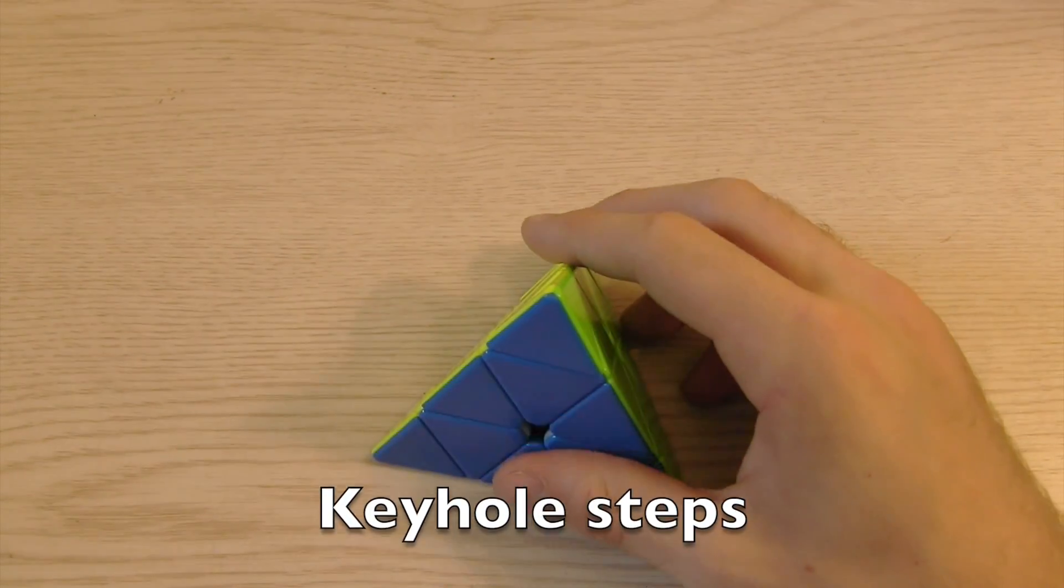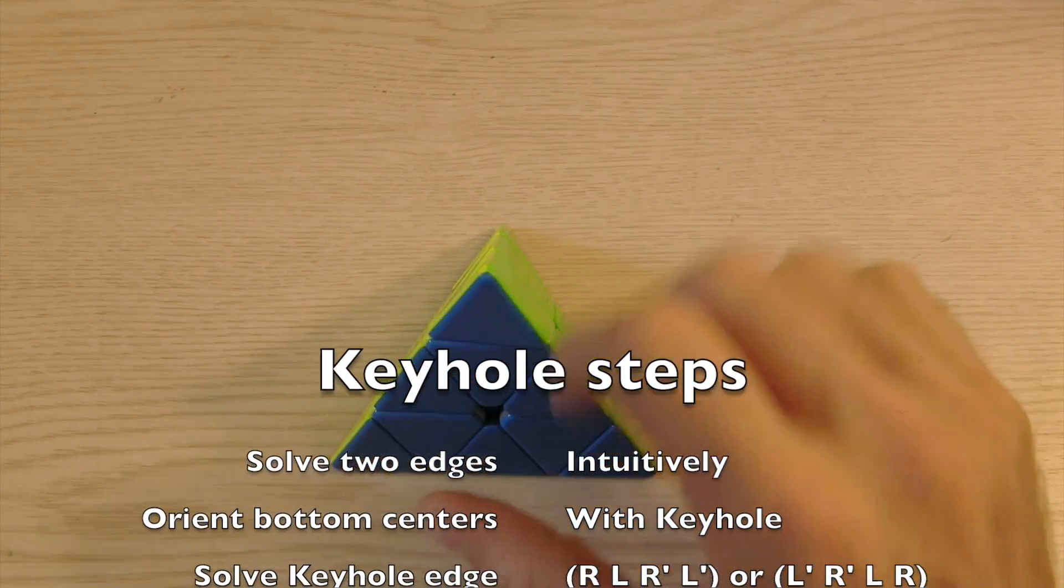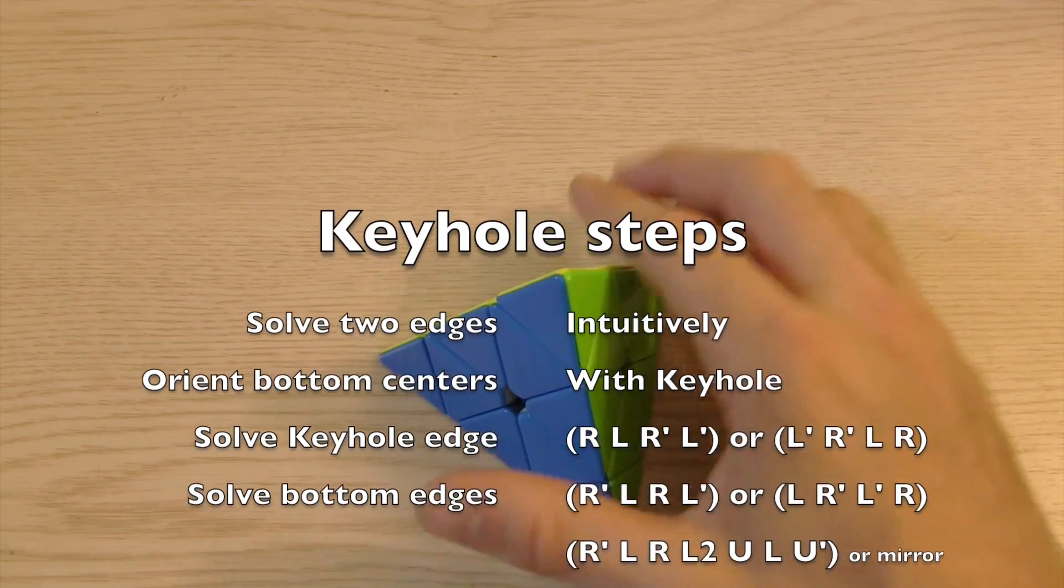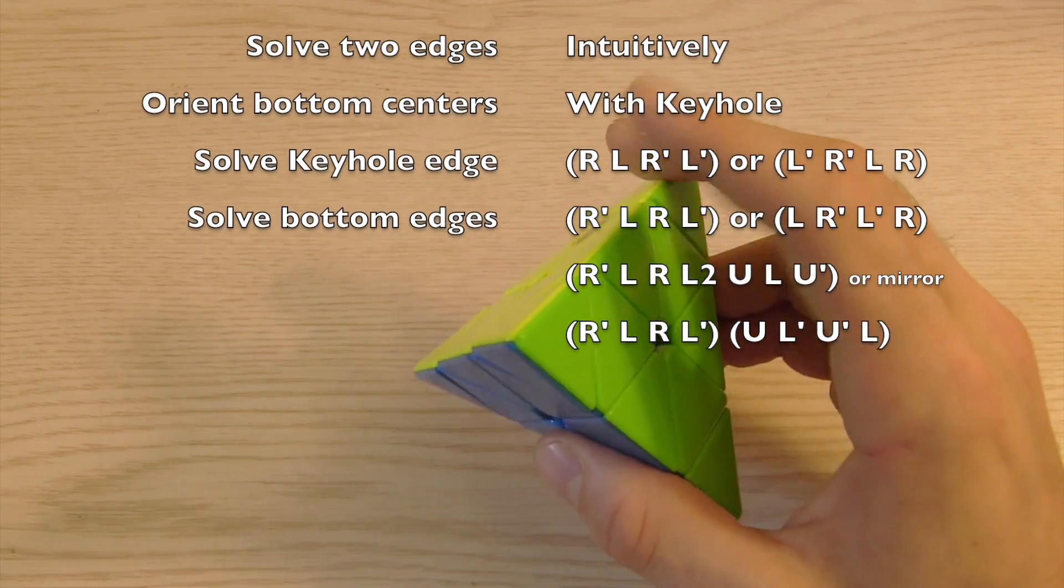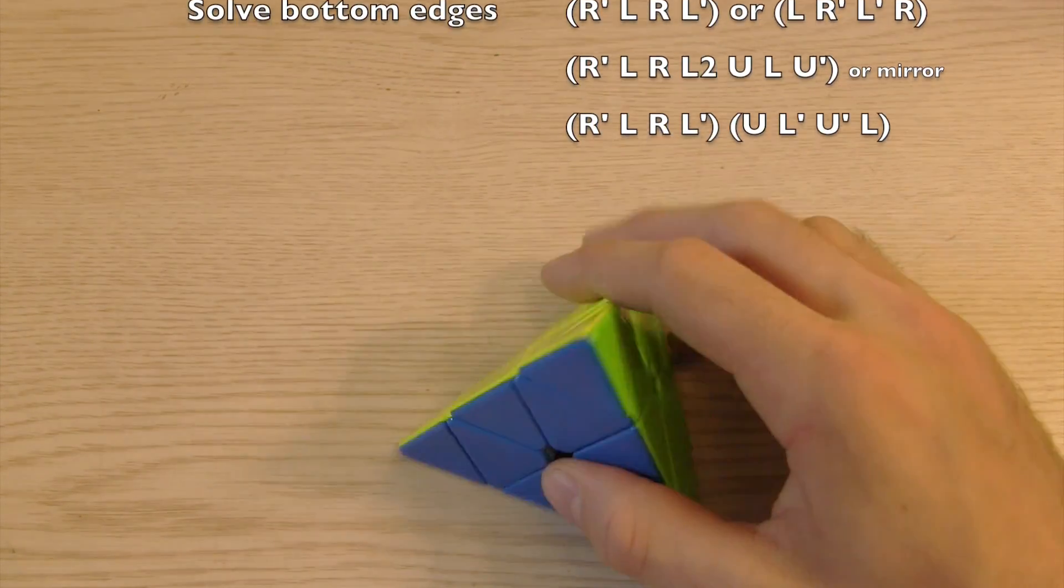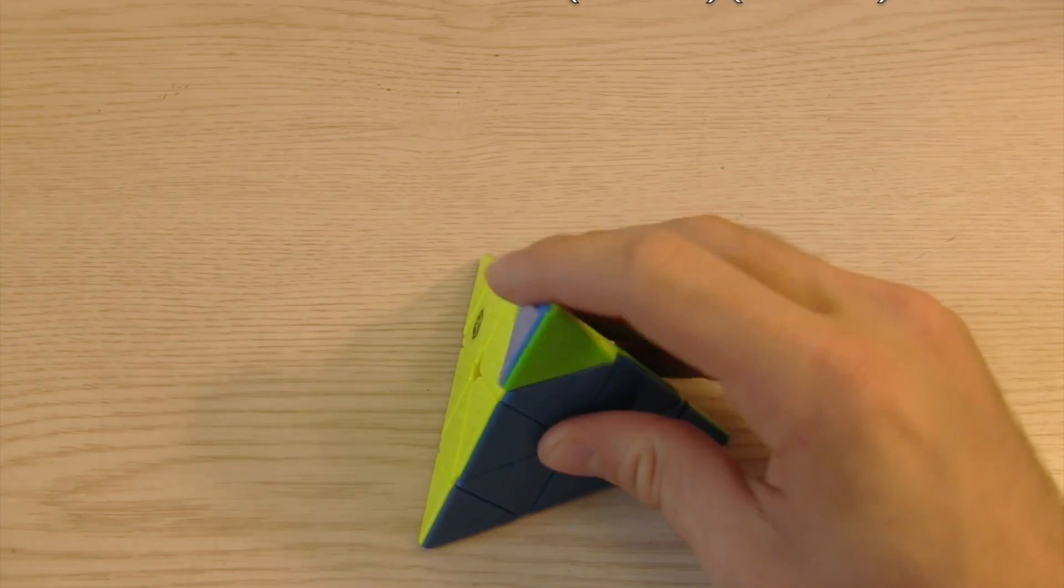So to go through the steps one more time, you intuitively put in two slots, use the keyhole to orient the final three centers, put in the final edge and then solve the bottom side and then fix the tips at the end.